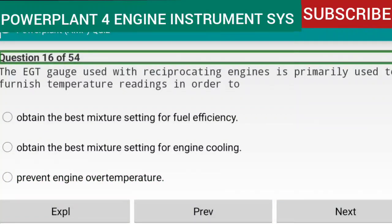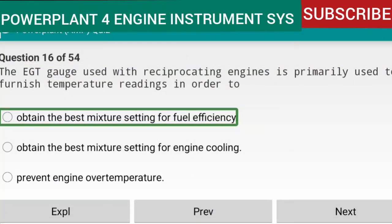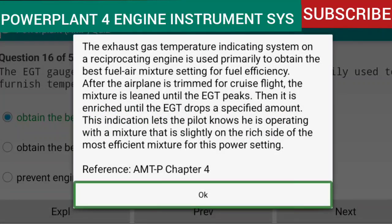Question 16 of 54: The EGT gauge used with reciprocating engines is primarily used to obtain the best mixture setting for fuel efficiency. After the airplane is trimmed for cruise flight, the mixture is leaned until the EGT peaks, then enriched until the EGT drops a specified amount. This lets the pilot know they are operating with a mixture slightly on the rich side of the most efficient mixture for that power setting. Reference: AMTP Chapter 4.